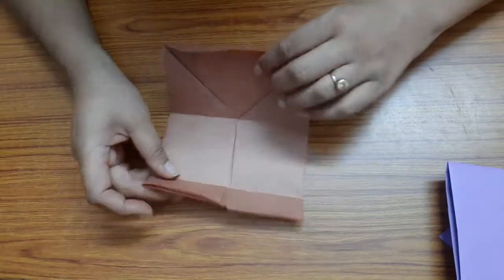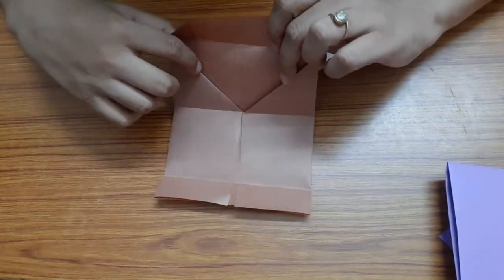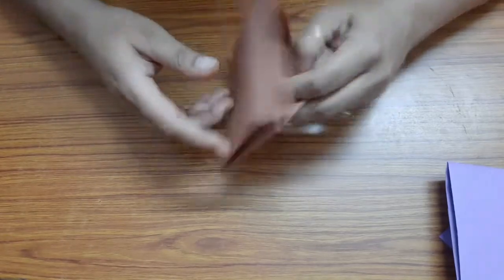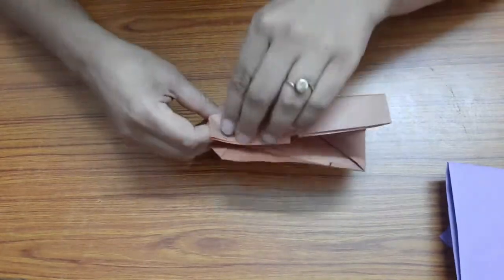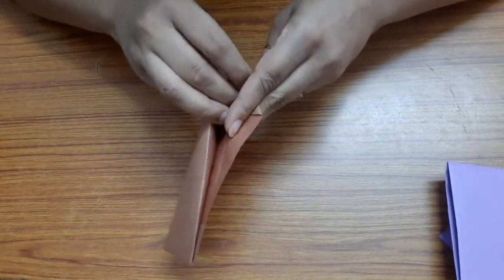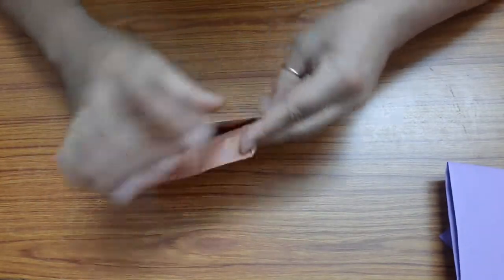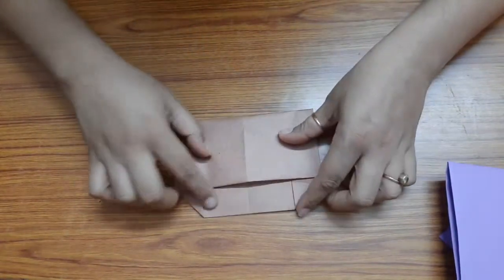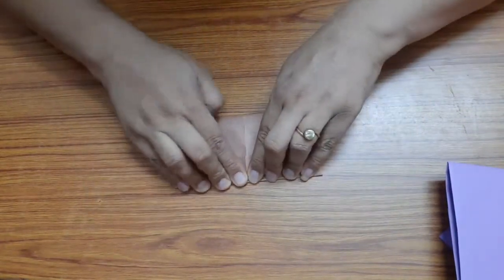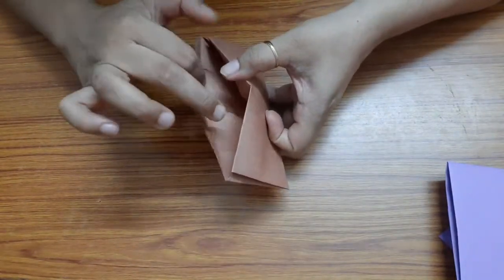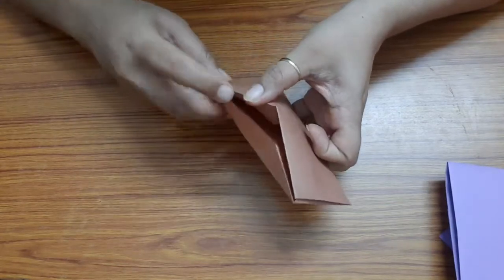Now fold this inside these triangles, fold it in half and insert it inside these triangles. This is the flap we can close it. So here we have an envelope with a rectangular paper.